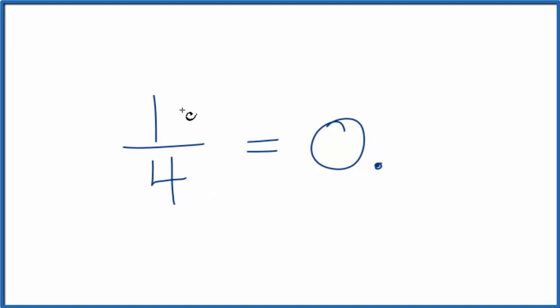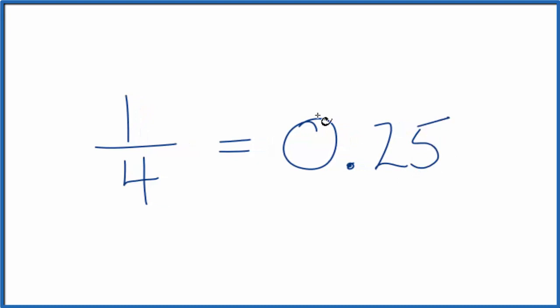We could just take a calculator and divide one by four. That would give us zero point two five. So one-fourth, the fraction one-fourth as a decimal would be zero point two five.